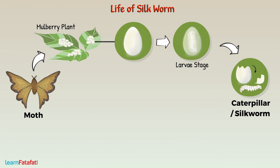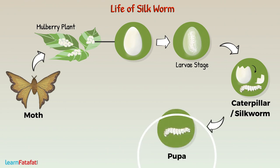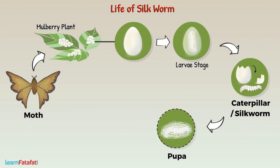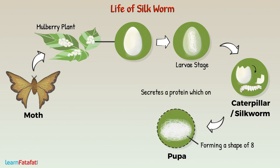The silkworm feeds on the leaves of the mulberry plant. When it grows and is ready to enter the next stage of its life cycle called pupa, it starts weaving a net around itself. It then swings its head from side to side, forming a shape of eight. While doing so, the silkworm secretes a protein which, on exposure to air, becomes hard. This is the silk fiber.